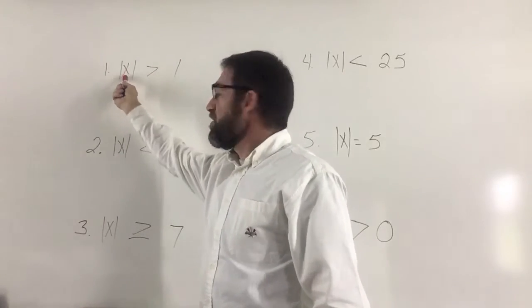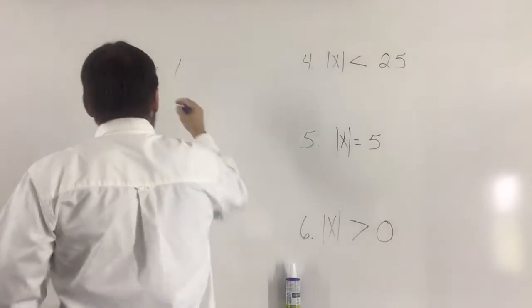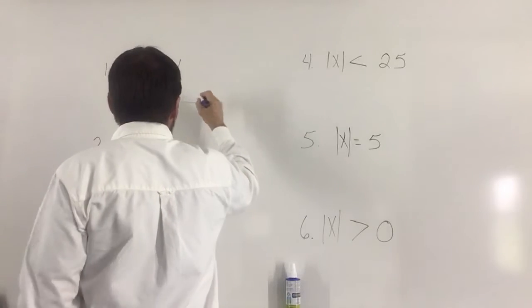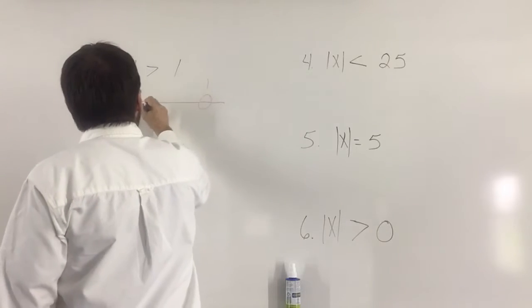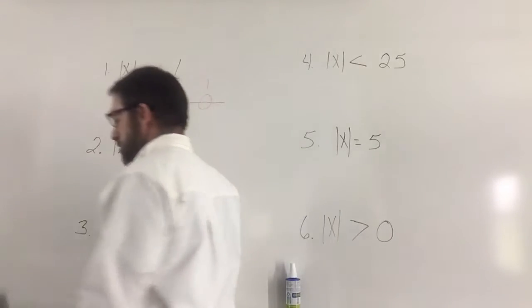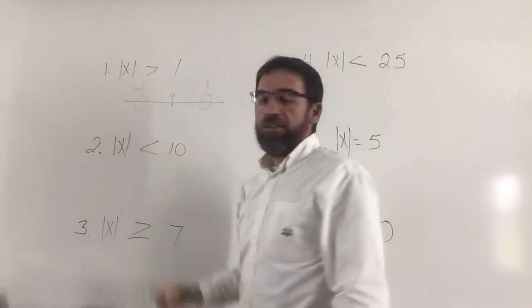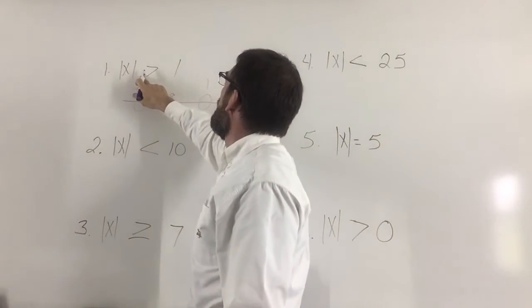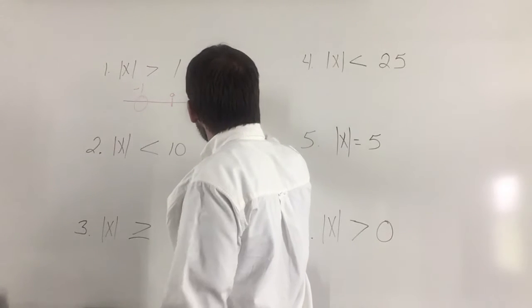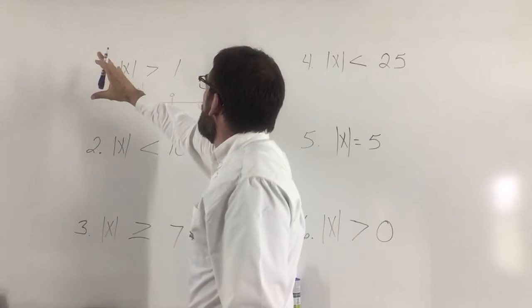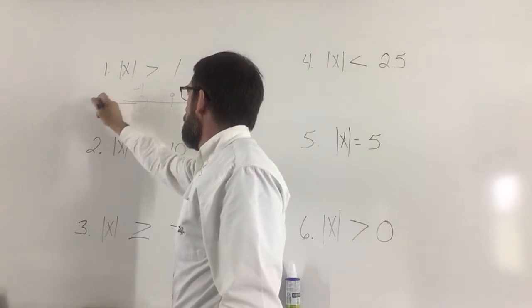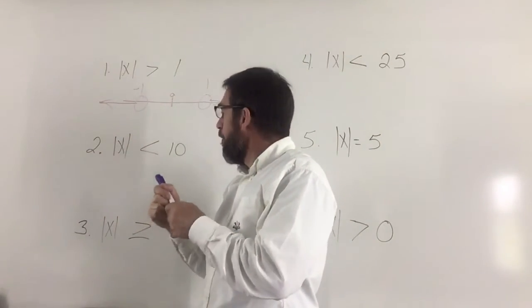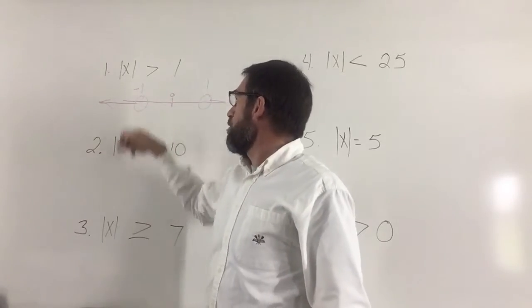Number one: x with an absolute value inequality of one. Because this is absolute value it could be positive one or negative one. I'll draw a number line with one positive and one negative, and zero in the middle. This inequality doesn't have the line underneath, so it's not solid — it's open. The arrow needs to go out away from the one in both directions. So you make your open circles and draw your arrows going outward accordingly.